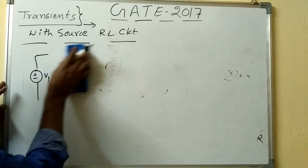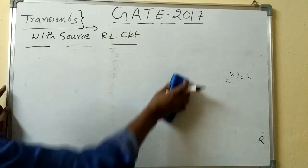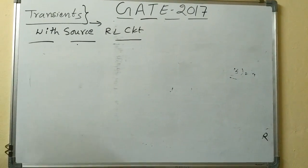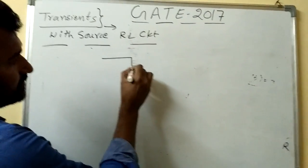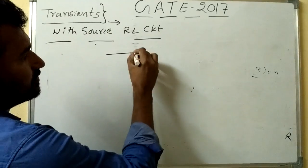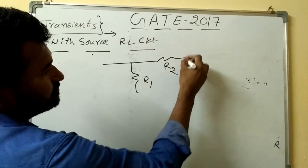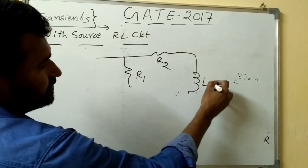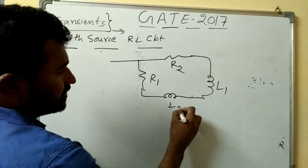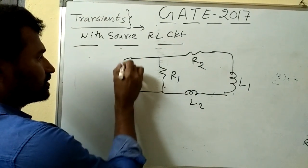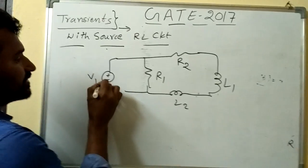Suppose we are having so many inductors and so many resistors in a circuit, suppose this is R1, this is R2, this is L1, some L2, and so on.